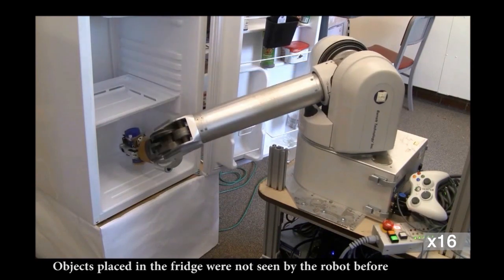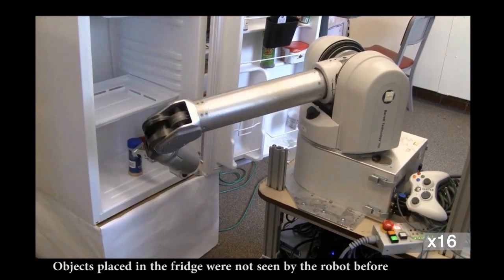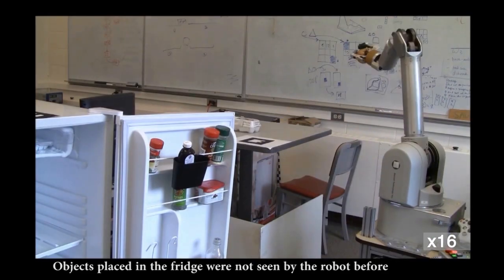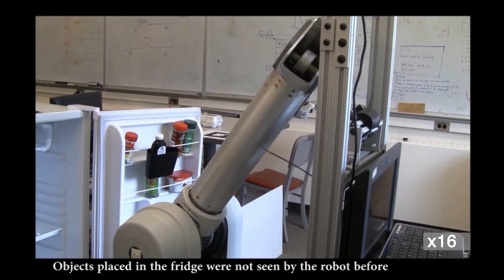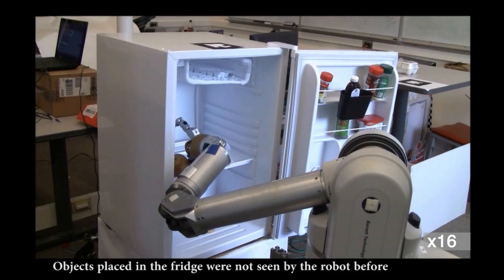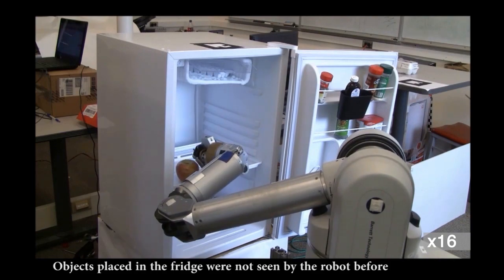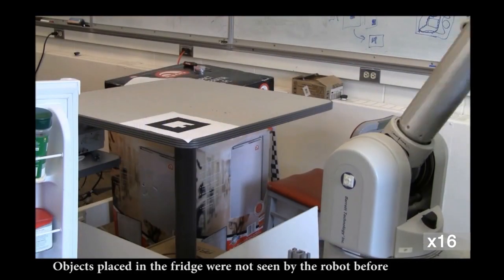Second, the placement needs to be both stable and semantically preferred. For example, a plate should be placed into a dish rack vertically rather than horizontally. In order to address these issues, we use a learning algorithm instead of planning or hand-scripted heuristic rules.